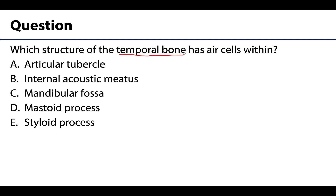All five answer choices are temporal bone structures, so that narrows nothing — focus on 'air cells within.' We talked about those air cells — open areas within the bone, similar to the paranasal sinuses. Only one answer stands out: the mastoid process. If you palpate underneath your ear you feel that bump — it's filled with air cells in close association with the ear. If a middle ear infection spreads into those air cells, it causes mastoiditis.